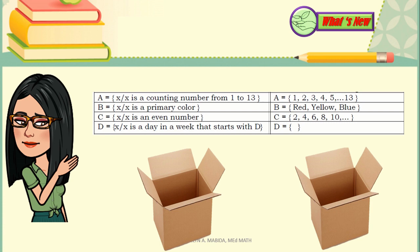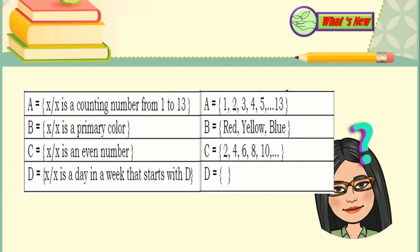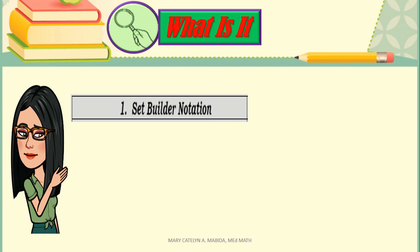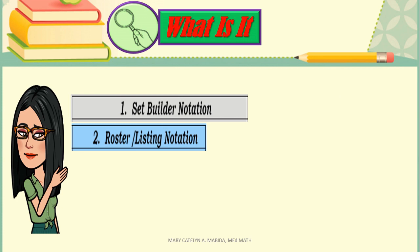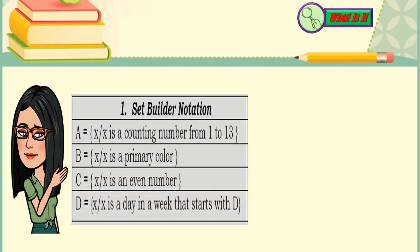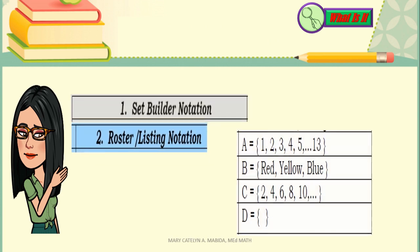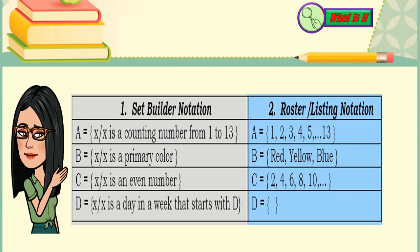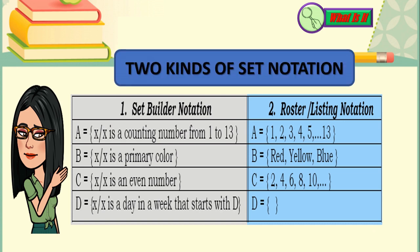Now looking at our sets of examples, what kind of set notations are they written in? Let's find out. Taking our first set of examples, is it written in Set Builder Notation or Roster Listing Notation? Well, let's check it out. And there you have it. Our first set of examples are written in Set Builder Notation. Now what about our second set of examples? And you got it right. It is written in Roster Listing Notation. Now what is the difference between these two kinds of notation?